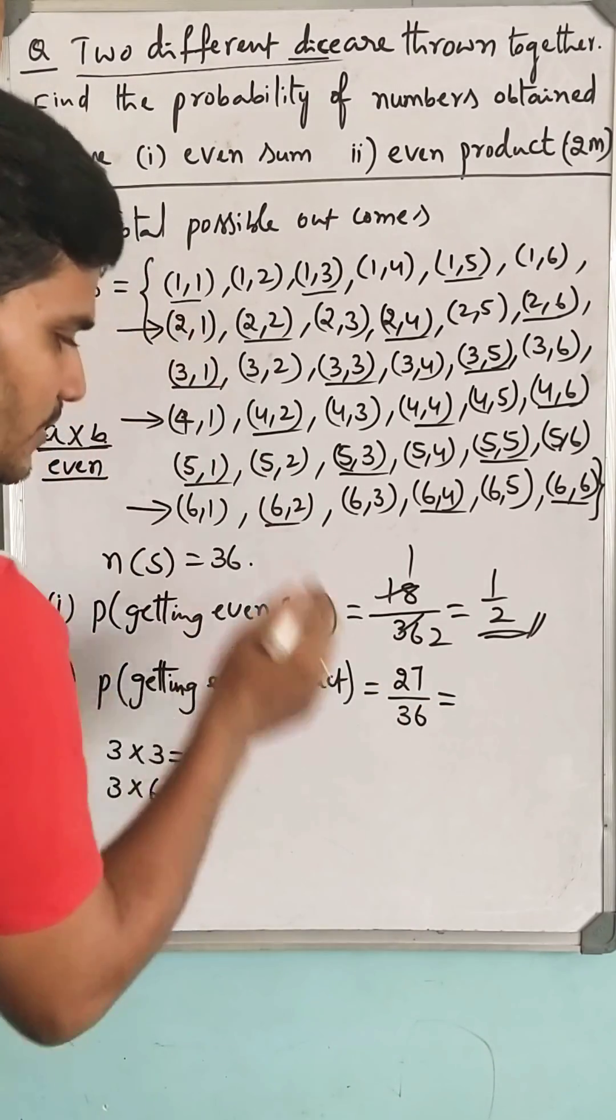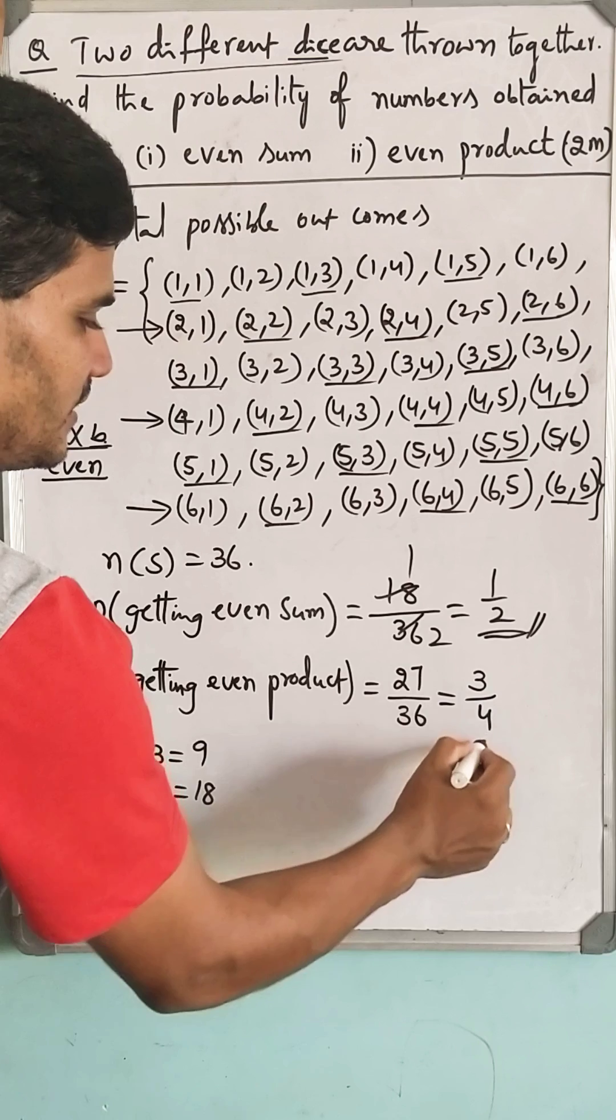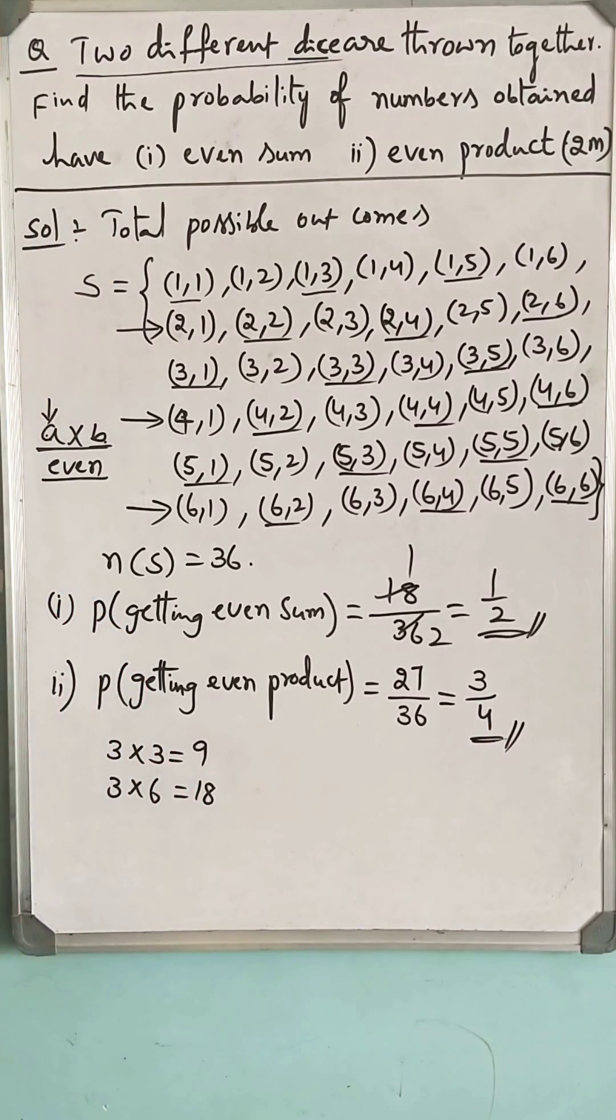So if you cancel with 9, 3 times 9, 4, this is your required probability: 3/4.